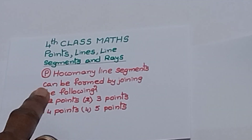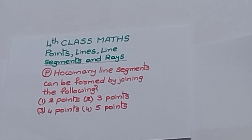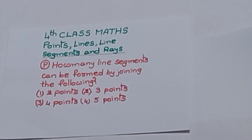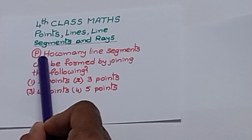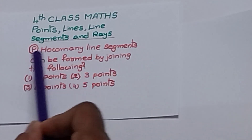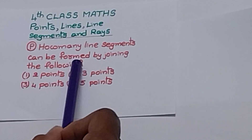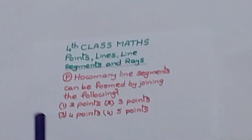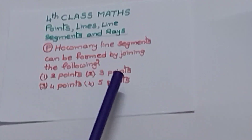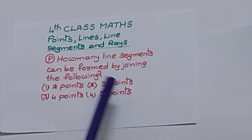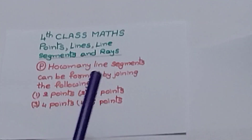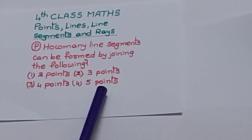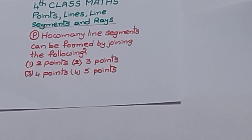Today we are going to solve a problem: how many line segments can be formed by joining the following? First one: 2 points. Second one: 3 points. Third one: 4 points. Fourth one: 5 points.